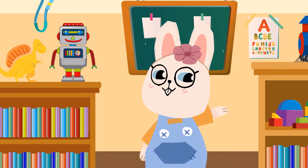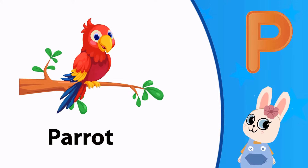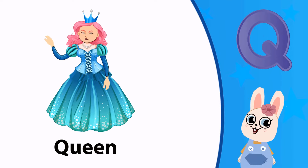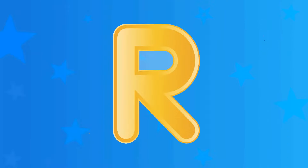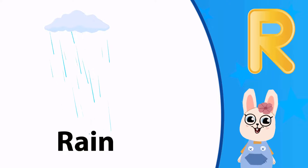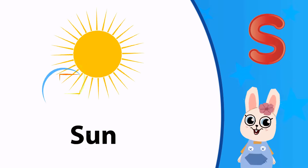Amazing! Now you say it! P. P is for parrot. Q. Q is for queen. R. R is for rain. S. S is for sun.